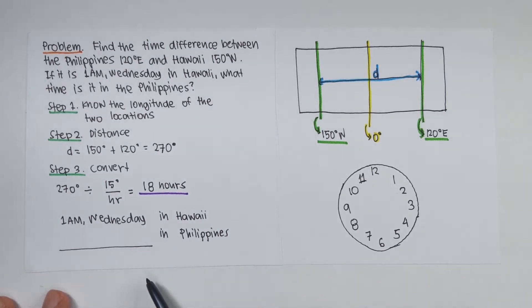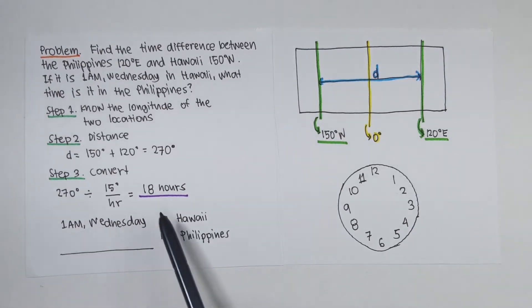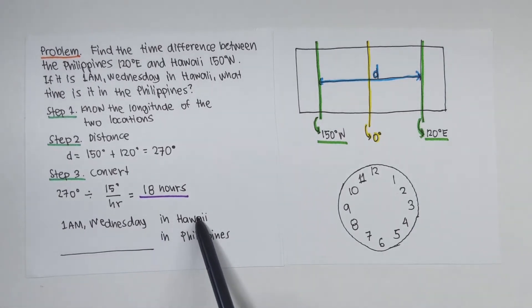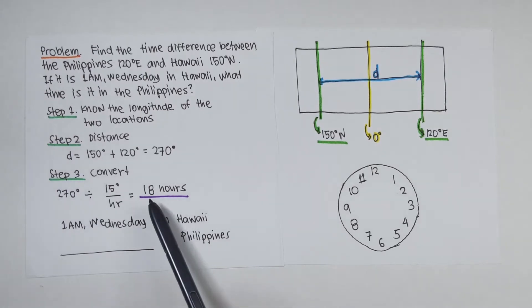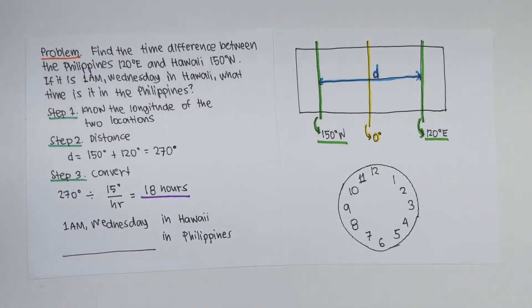The Philippines is 18 hours ahead of Hawaii. So if it is 1 a.m. Wednesday in Hawaii, count 18 hours clockwise since the Philippines is ahead.